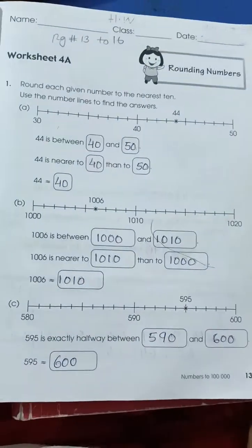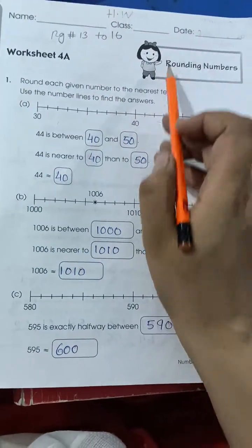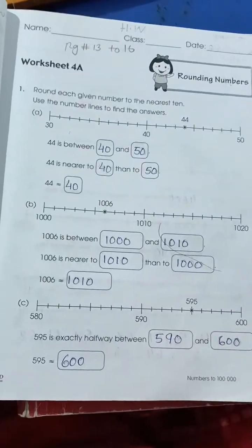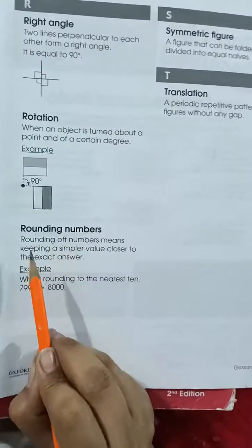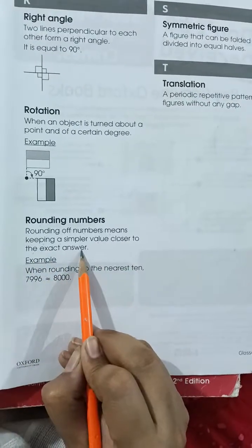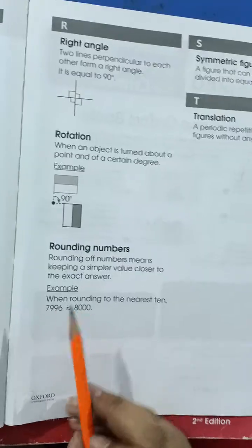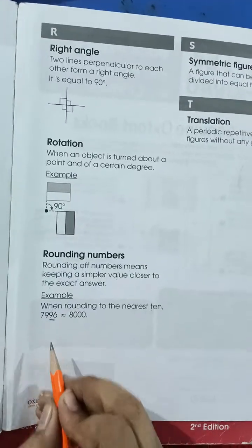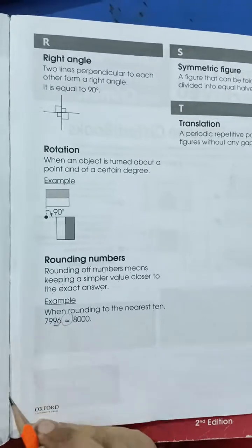Page number thirteen, worksheet 4A. Again, write your name, class, and date. In this worksheet, you are going to solve rounding numbers. Rounding a number means keeping a simpler value closer to the exact number — whatever the exact number is, your rounded number will be closer to it. For example, when rounding to the nearest ten, the number seven thousand nine hundred and ninety-six becomes eight thousand. This symbol represents round off.